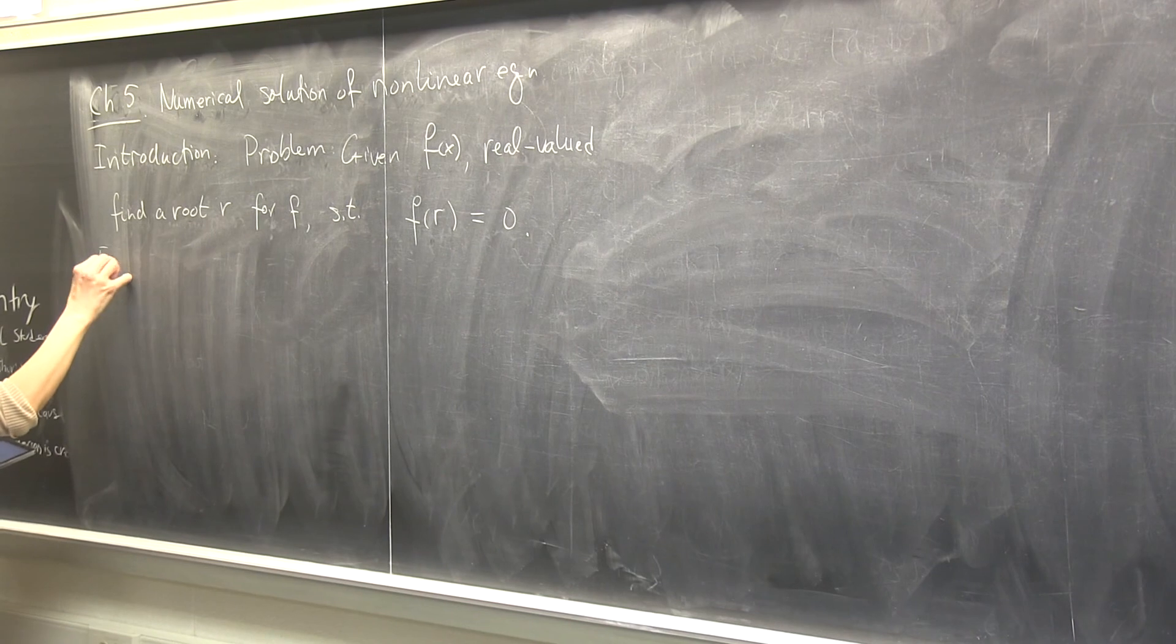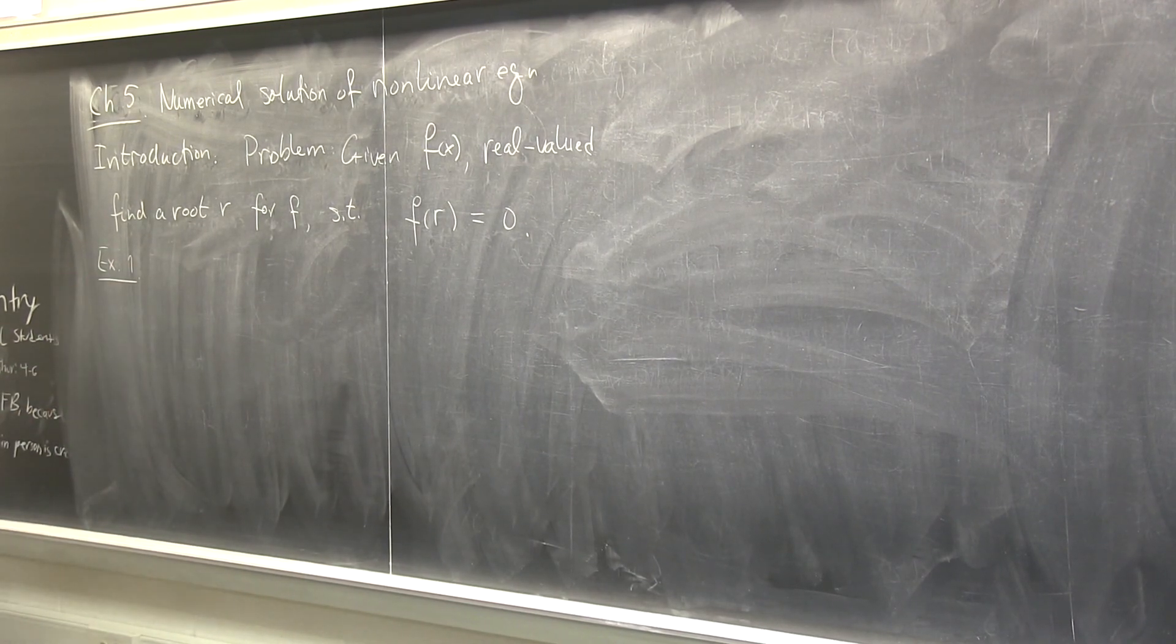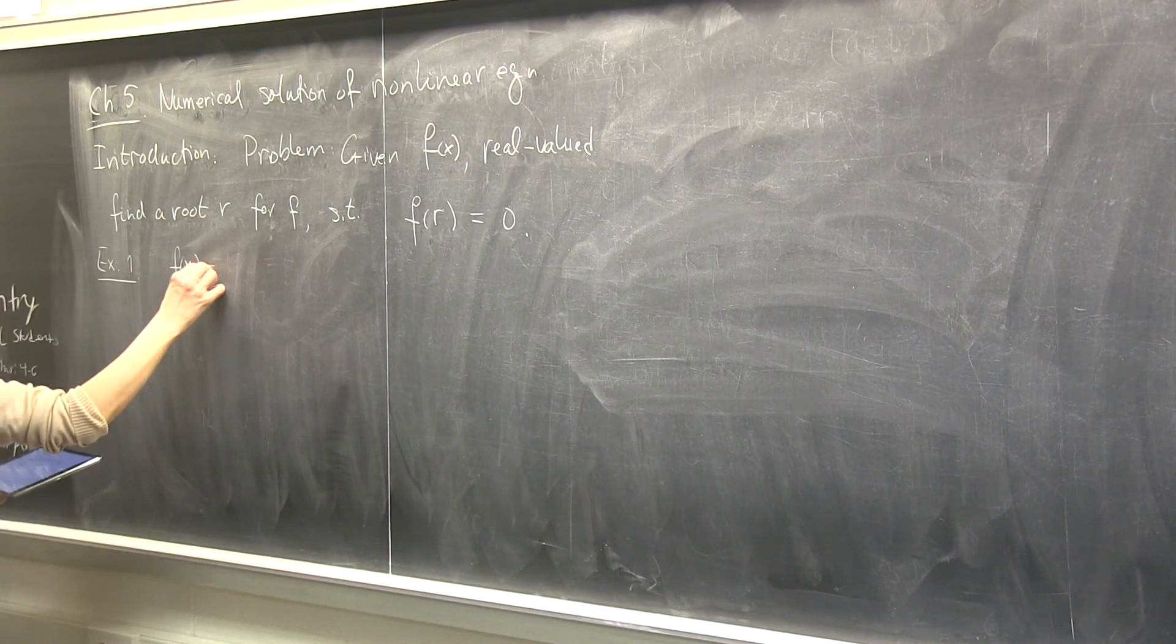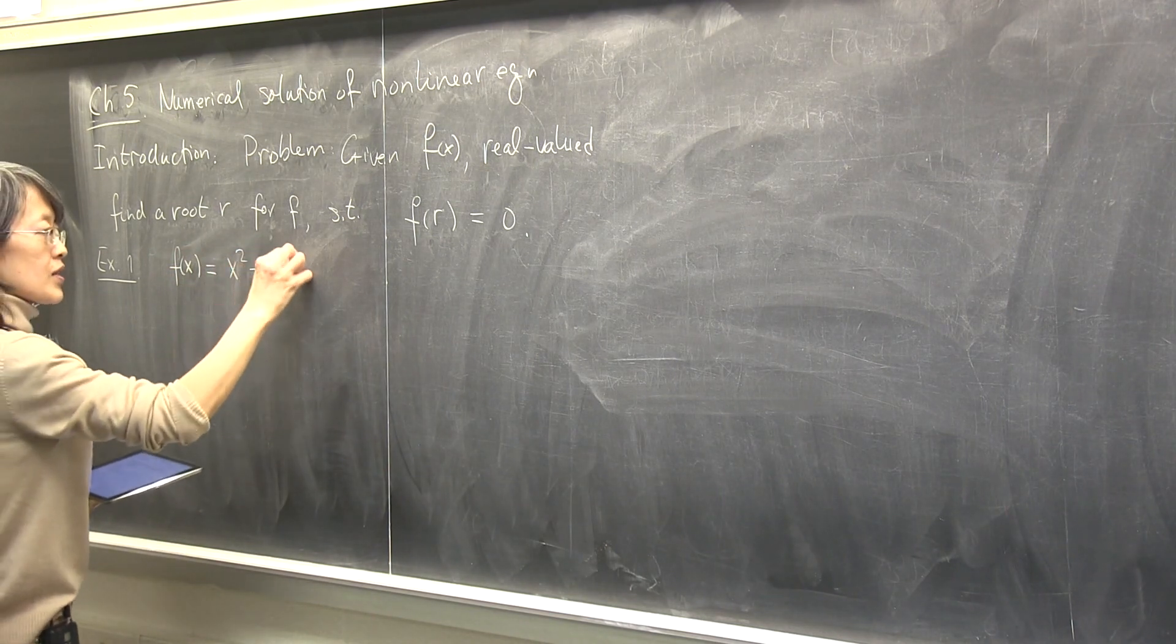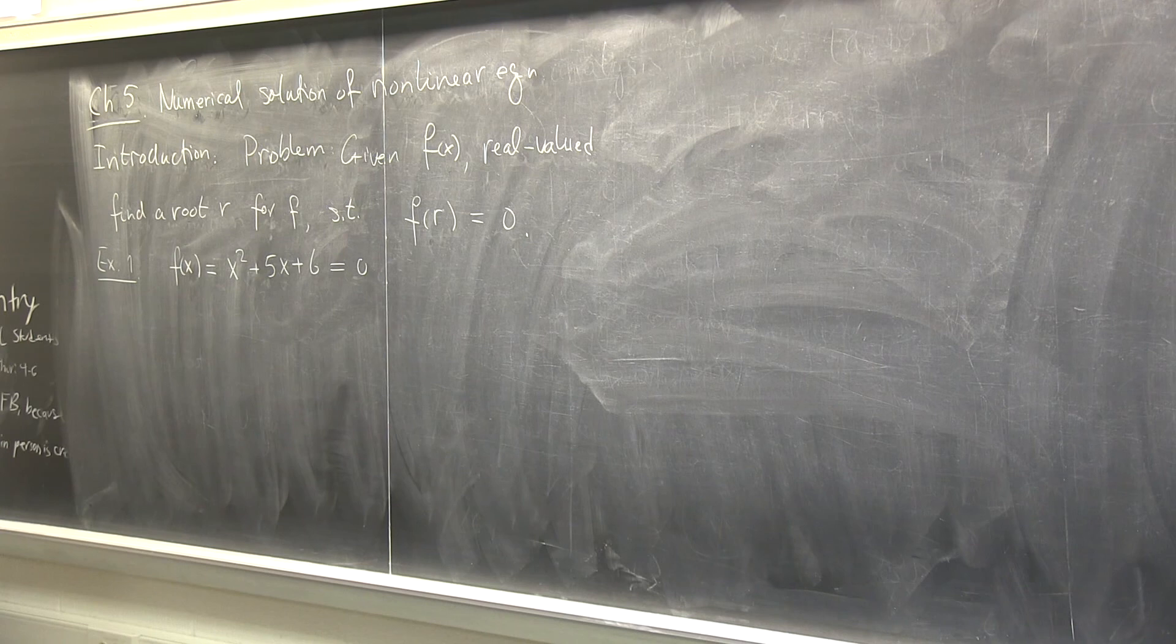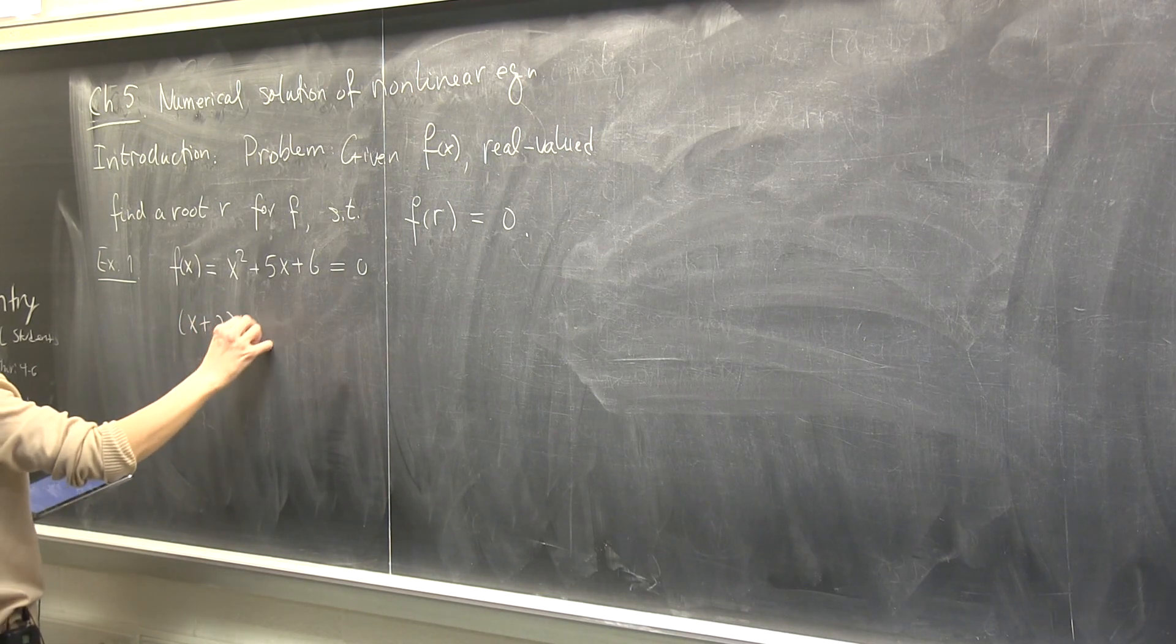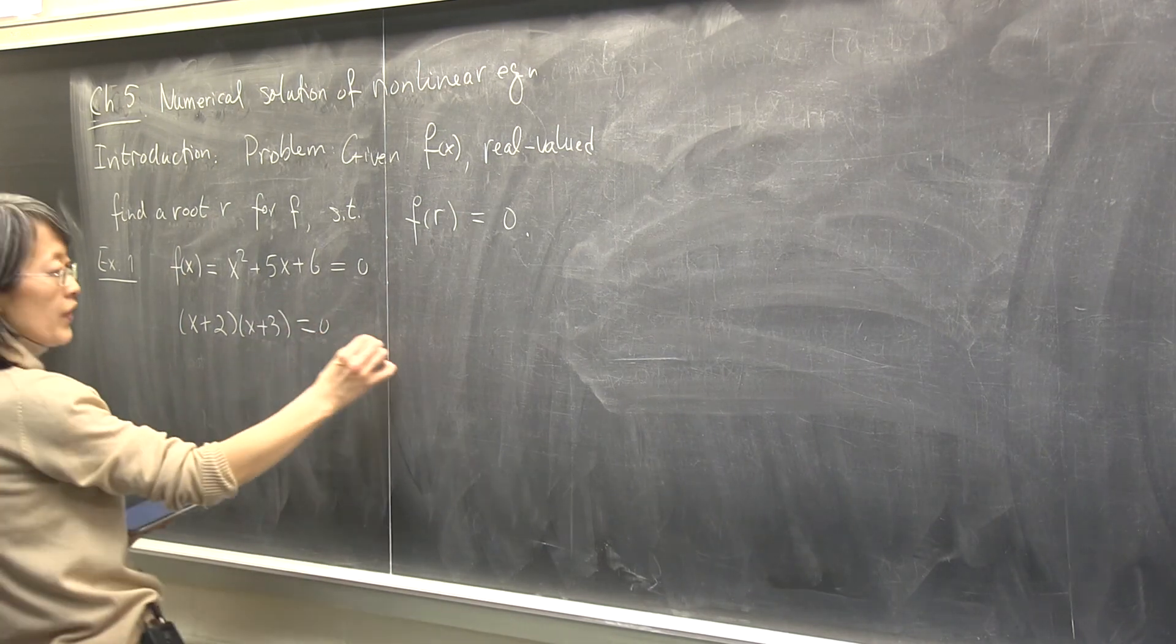So since it's an introduction, let's be silly and look at some examples. And for each example, let's make some point. Consider a quadratic polynomial of x. Let's put in some nice numbers: x squared plus 5x plus 6. And I want to solve it, find the roots. Everybody knows how to do that? Quadratic polynomials. We do x plus 2, x plus 3 equals to zero. Is that right? How many roots do we find?